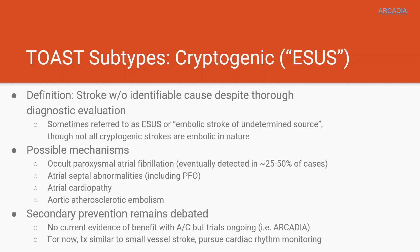The next category is cryptogenic stroke — a stroke where no identifiable cause can be elucidated despite thorough diagnostic evaluation. These are also referred to as ESUS, or Embolic Stroke of Undetermined Source. There are several possible mechanisms: AFib is a key player, with about 25 to 50 percent of these patients ultimately found to have covert paroxysmal AFib. Other possible causes include atrial septal abnormalities, PFO without DVT, atrial cardiopathy, and embolism from atherosclerotic disease in the proximal aorta.